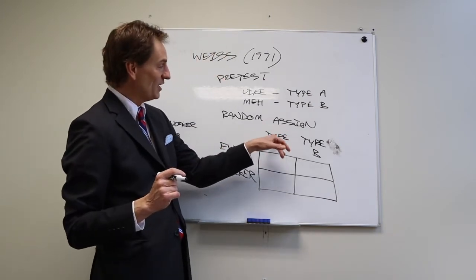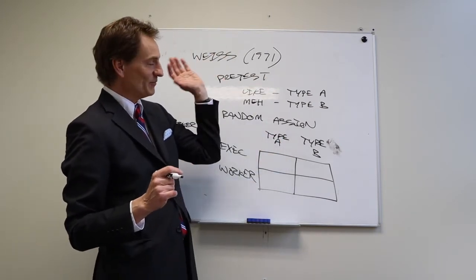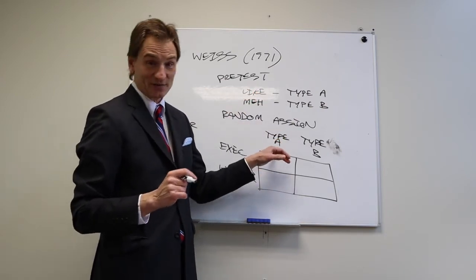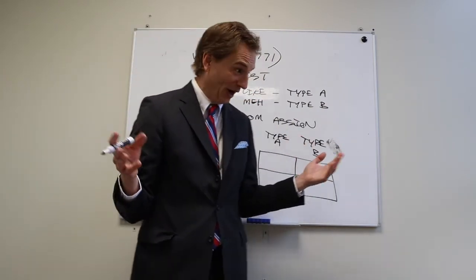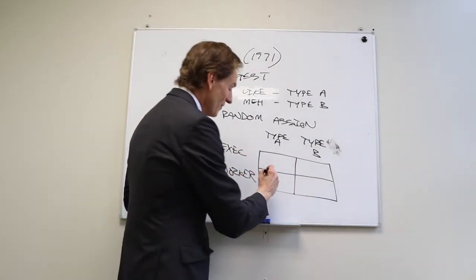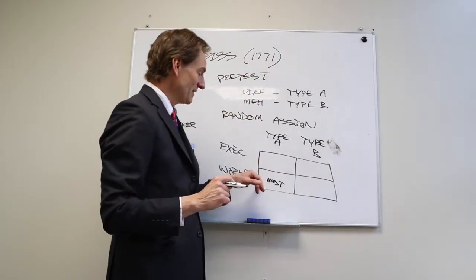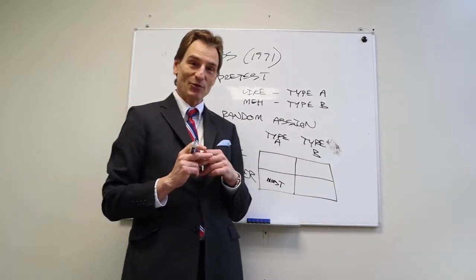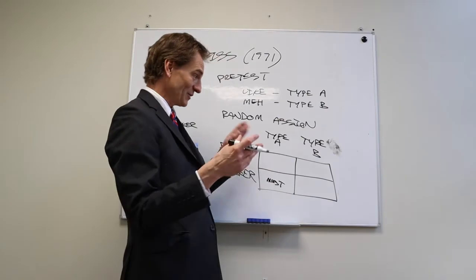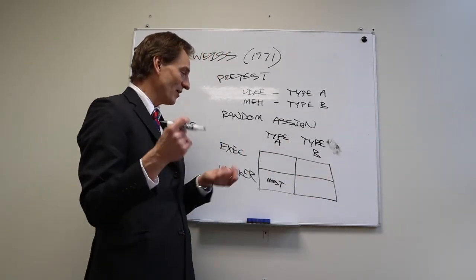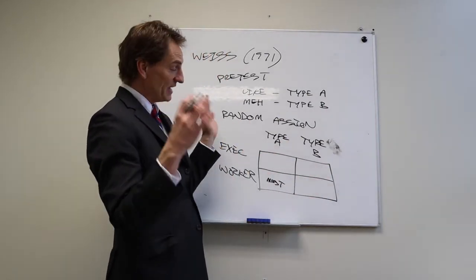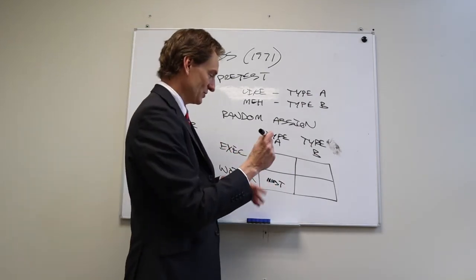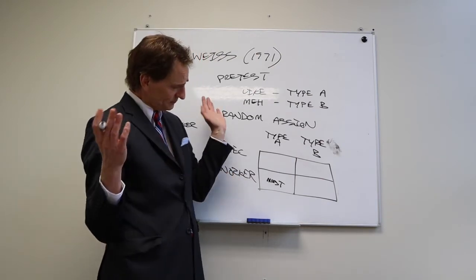What Weiss found, when randomly assigning to conditions, was that Type A monkeys were always more stressed because they're just under more stress in general. But the most stressed group was Type A monkeys assigned to the worker role — having to watch a Type B monkey pressing the buttons. That was very upsetting for them, and this was the group most likely to develop ulcers.